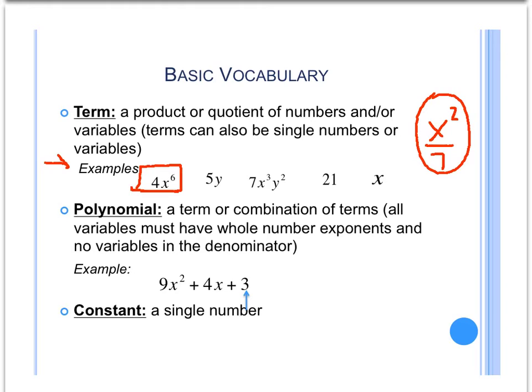Now a polynomial is a term or a combination of terms. All of those variables must have whole number exponents and no variables in the denominator. As you can see, we have 9x squared, which is one term, then plus 4x, another term, plus 3, another term. So this polynomial is a combination of these three terms.